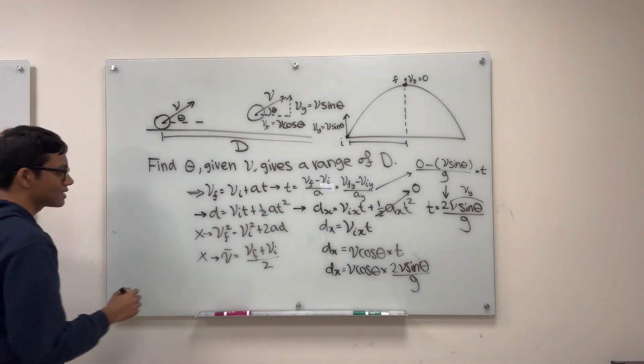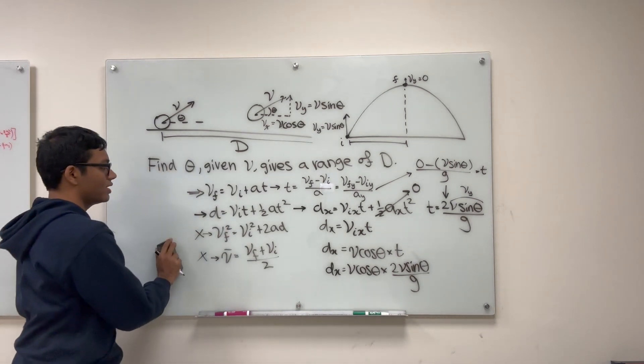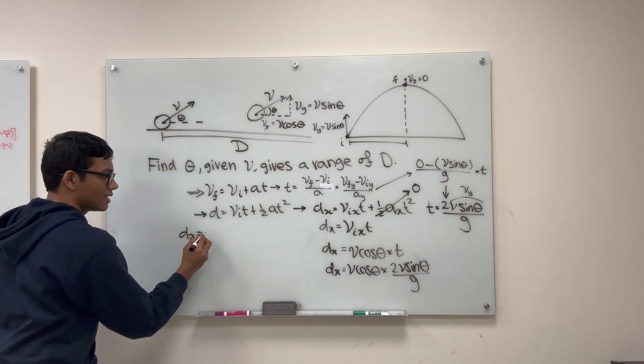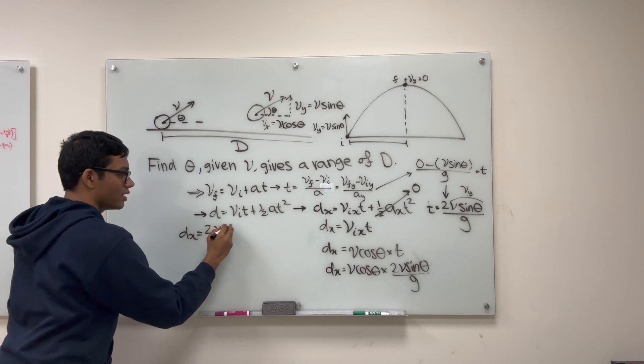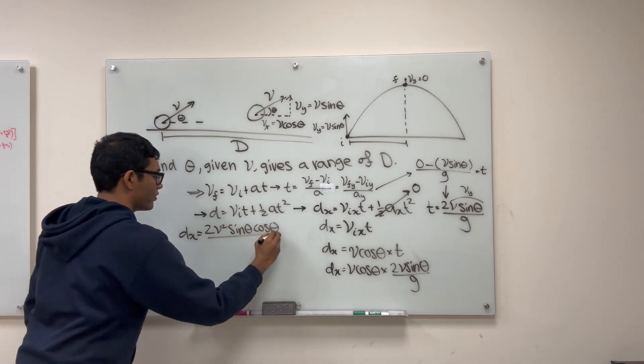So d sub x is going to be v cosine theta times 2v sine theta divided by g. So our horizontal range is dx equals 2v squared sine theta cosine theta over g.